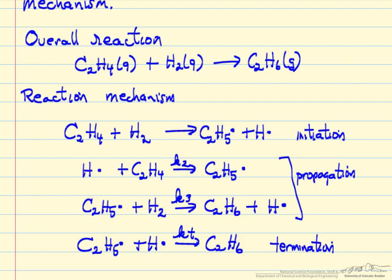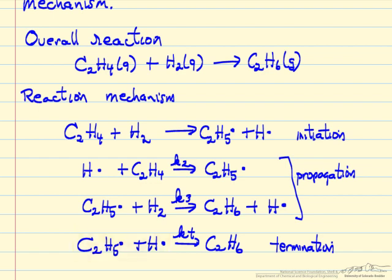We're going to run through this sequence many times once we've initiated the reaction. Once we've created the hydrogen radical, we go through the chain mechanism many times, and then there's some probability that a hydrogen and ethyl radical will recombine in a termination reaction to make product. The amount of product made by this step is small because both species are present in low concentrations since they're very reactive. So the hydrogen atom is most likely to collide with either a hydrogen molecule or an ethylene molecule.